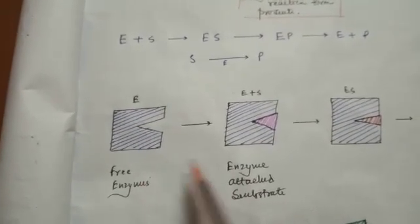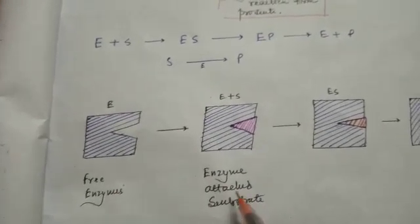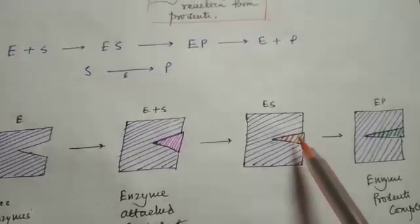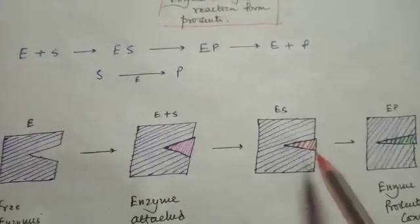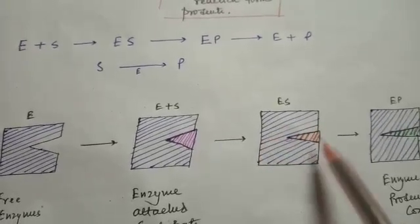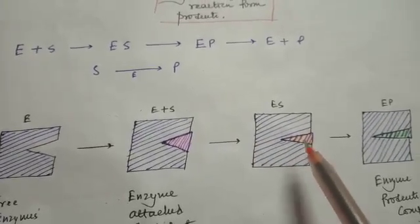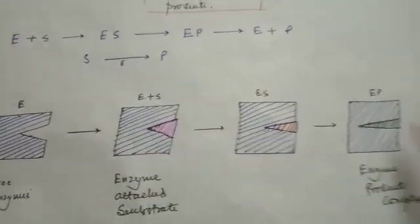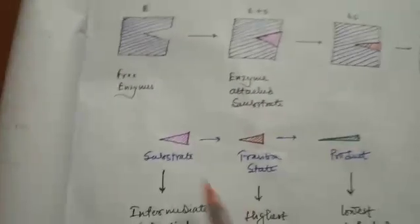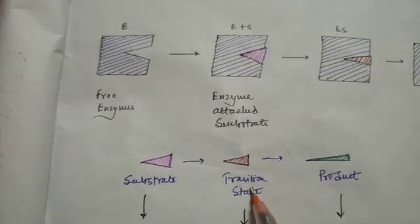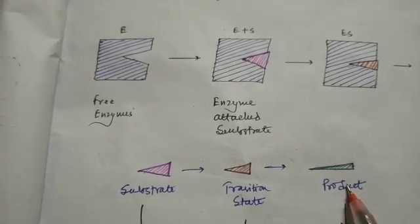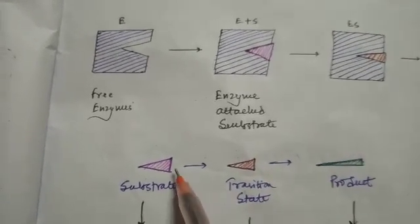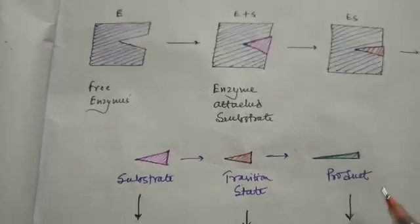Another important point is that when the free enzyme binds with the substrate to form the enzyme-substrate complex, some changes occur in the particular substrate. This changed portion of the substrate is known as the transition state of the substrate. So the substrate comes to the transition state, and then forms the product. This is the case of transition from substrate to transition state, then to the product.